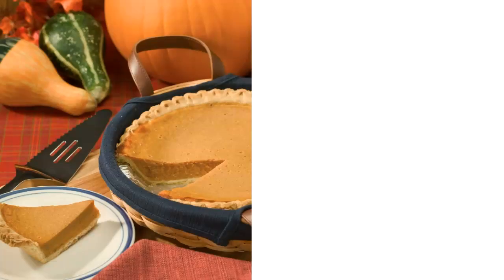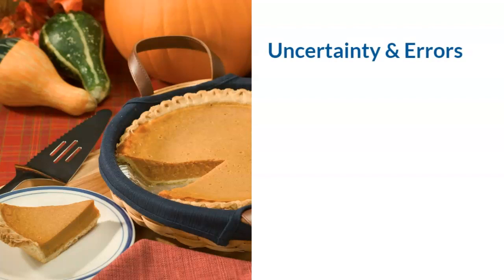Since my favorite pie is pumpkin pie, I'll be using pie as an example to explain the uncertainty that can occur in hypothesis testing. Imagine that the whole pumpkin pie is the population. To test if the whole population tastes good, we would technically have to eat the whole pie. Rather, we should eat a slice of the pie to determine if the whole pie tastes good. In other words, we're making a decision on the whole pie based on a slice of pie. This analogy is exactly how hypothesis testing works.